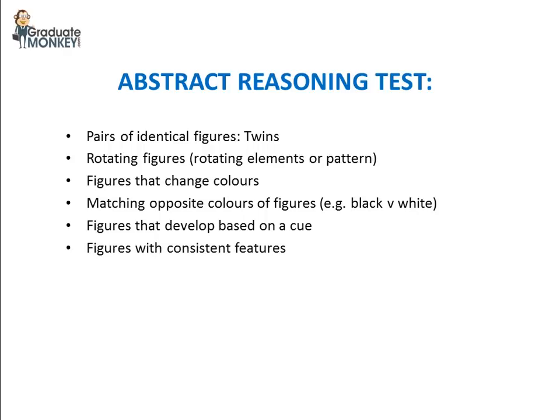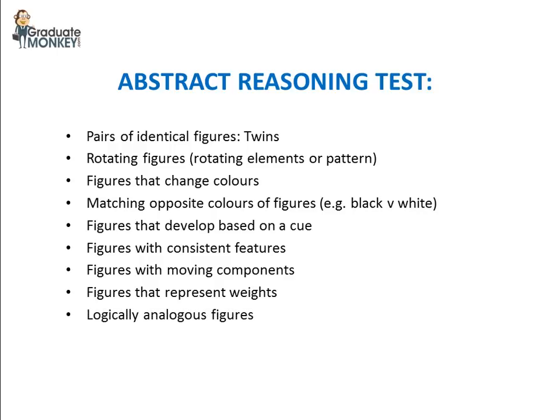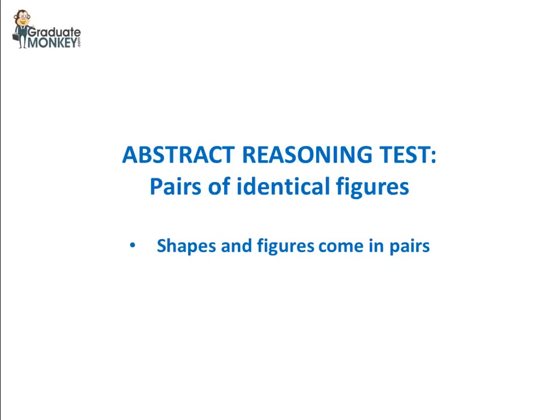Then you have figures with consistent features, figures with moving components, figures that represent weights, and finally, logically analogous figures. So, let's begin with the first most common type, it's called the pairs of identical figures.